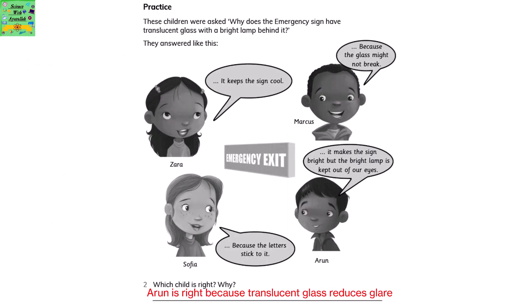These children were asked: why does the emergency sign have translucent glass with a bright lamp behind it? Zara said it keeps the sign cool. Marcus said because the glass might not break. Sophia said because the letters stick to it. Arun said it makes the sign bright but the bright lamp is kept out of our eyes. Arun is right because translucent glass reduces glare.